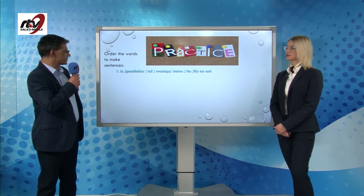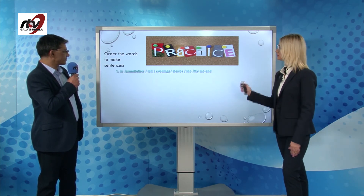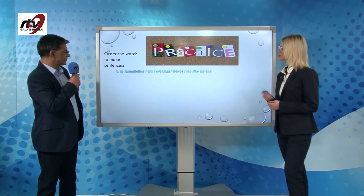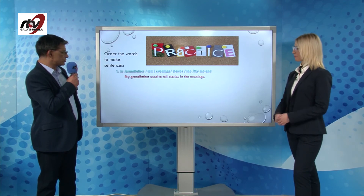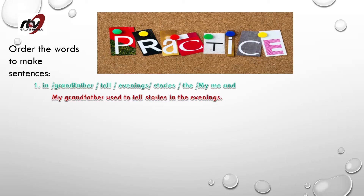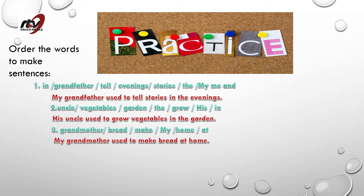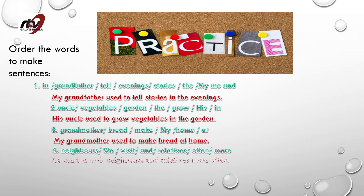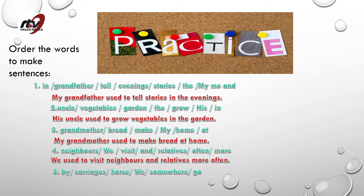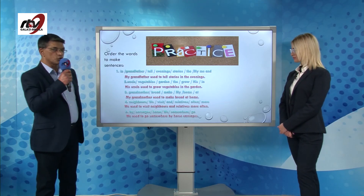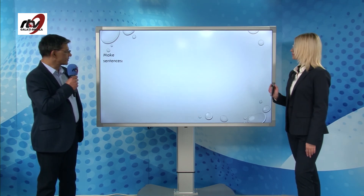Let's move on to the practice part. For our first activity, we have to order the words to make correct sentences using 'used to.' My grandfather used to tell stories in the evenings. His uncle used to grow vegetables in the garden. My grandmother used to make bread at home — now she doesn't. We used to visit neighbours more often. And we used to go somewhere by horse carriages.